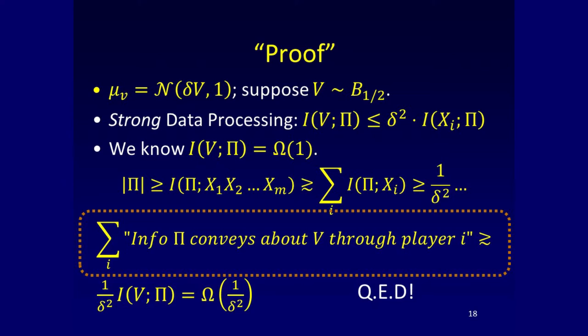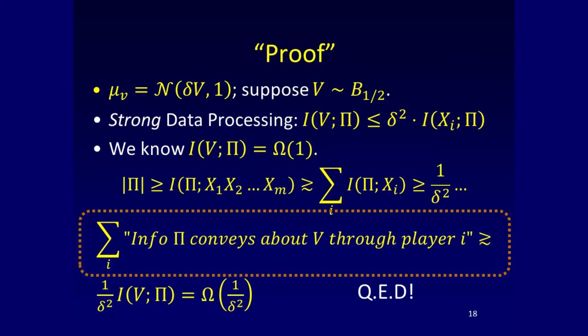We are equipped with the strong data processing inequality and we can break the information channel between pi and the x's into mutual information between pi and each individual x_i. Then, how much information pi conveys about v through player i is delta-squared times how much information pi conveys about x_i. In a perfect world, we could just convert this intuition into formulas: the total amount of information pi conveys about v should be at least a constant — roughly half a bit, since we need to learn v. The bound would just follow. Of course, this is not yet a mathematical statement — maybe one day.